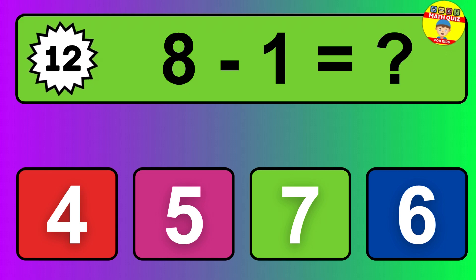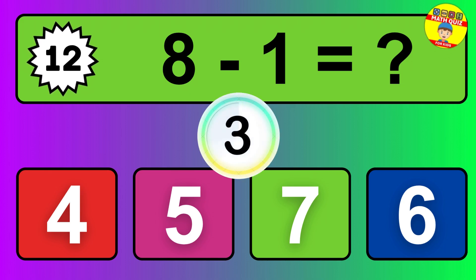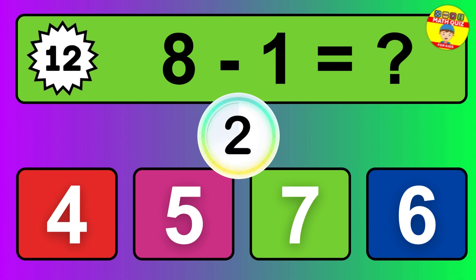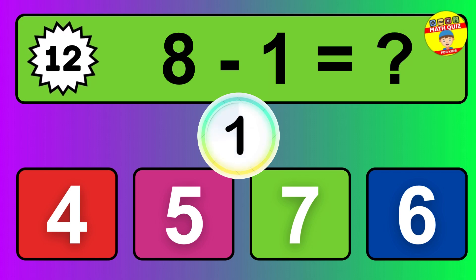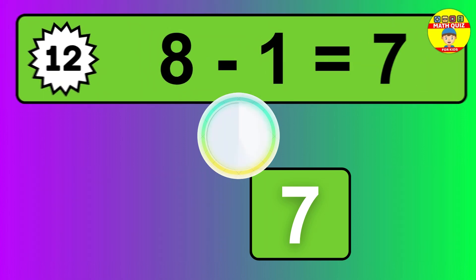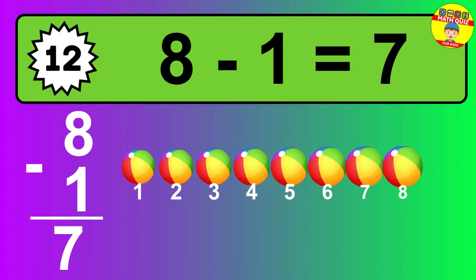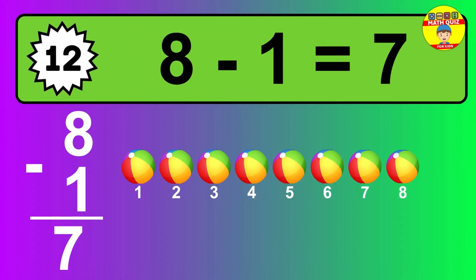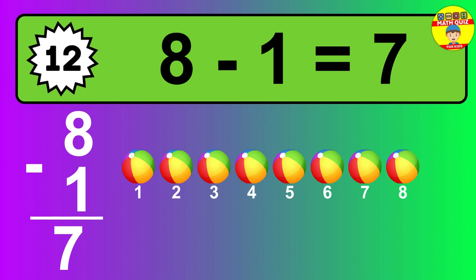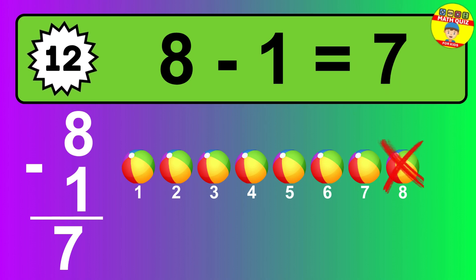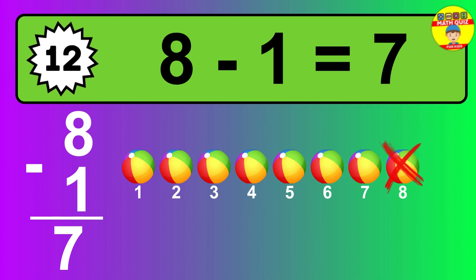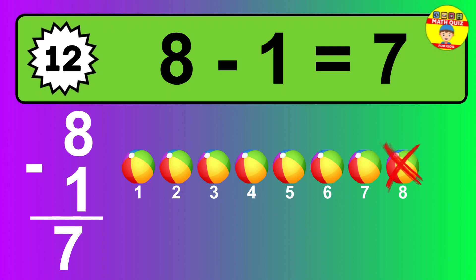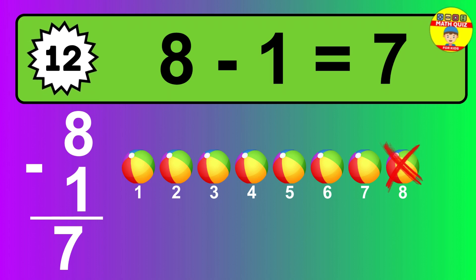Question 12. 8 minus 1 equals what? The answer is 8 minus 1 is 7. Let's count it: 1, 2, 3, 4, 5, 6, 7.